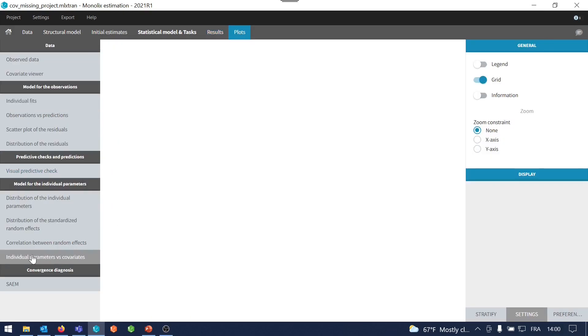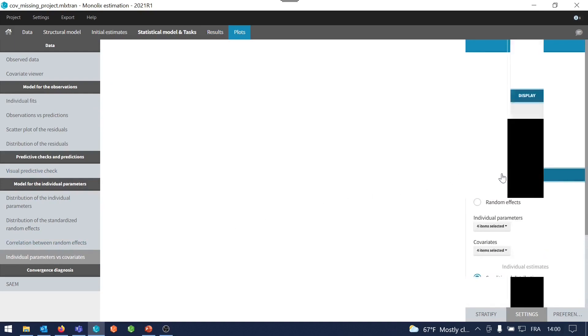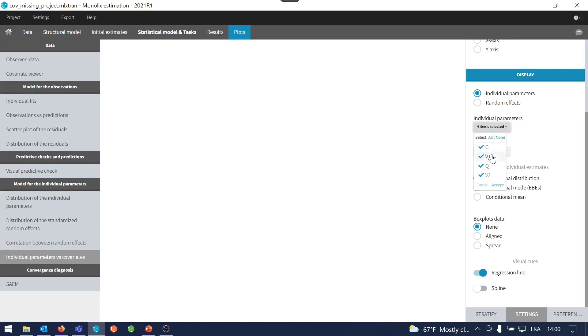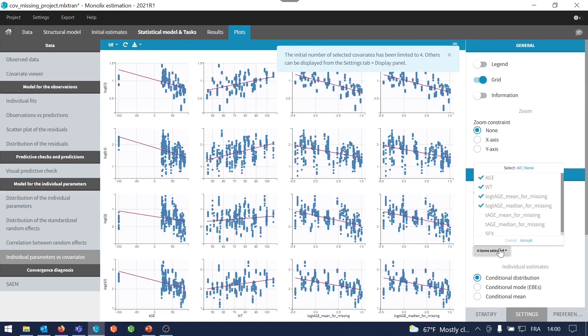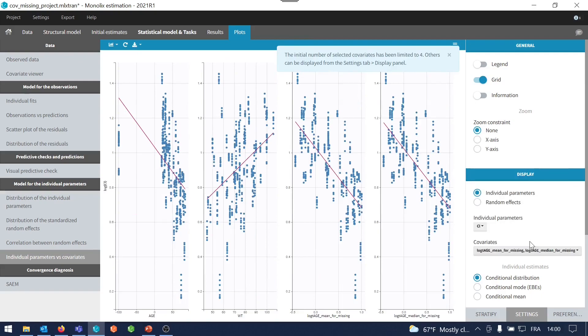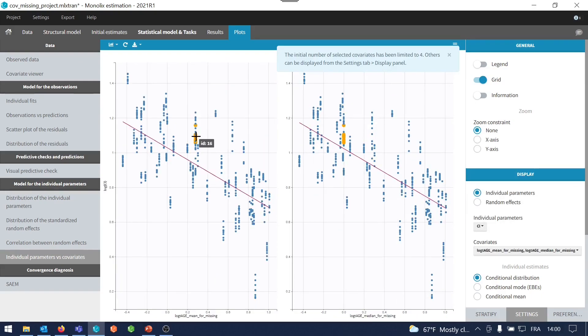I can also look at the plots, individual parameters versus covariates, and here I can select the parameter clearance, and I can select the log transformed covariates that I created. Here you see that this ID16 has different imputed values in the case of mean for missing values or median for missing values. But you see that in both cases, there is a clear correlation in between the log transformed clearance and the log transformed covariate age. So there doesn't seem to be an influence between the imputed value that I selected and the fact that there will be a covariate effect of age on my clearance parameter.